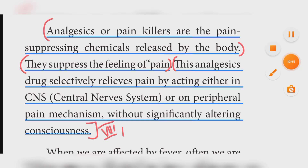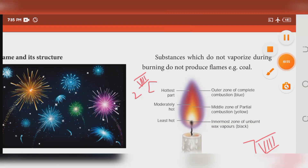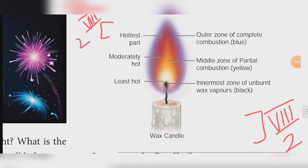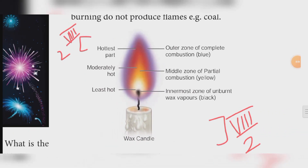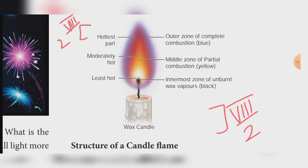Eighth section — Second one: make a labelled diagram of a candle flame. Refer book page number 73. Hottest part — outer zone of complete combustion — blue. Moderately hot — middle zone of partial combustion — yellow. Least hot — innermost zone of unburned wax vapours — black.